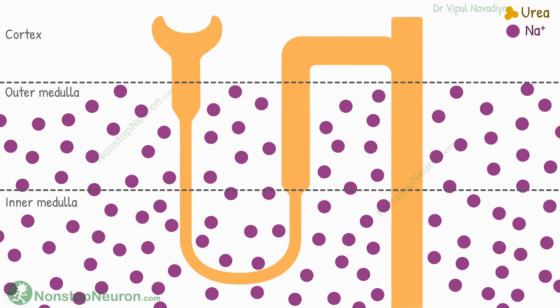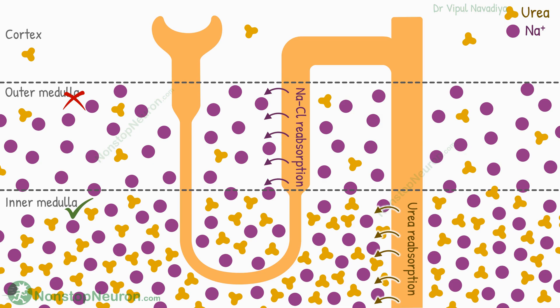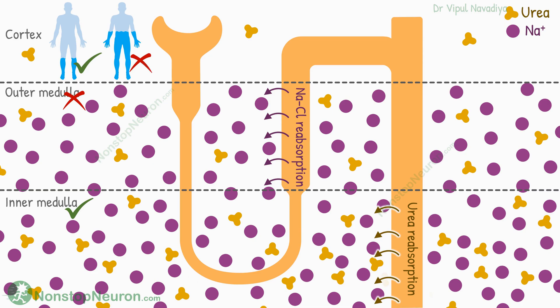A few more points. Urea contributes to hyperosmolarity mainly at the inner medulla. In the outer medulla, hyperosmolarity mainly comes from sodium and chloride ions. This is because the thick ascending limb, which reabsorbs sodium and chloride, is located in the outer medulla, and the inner medullary collecting duct, which reabsorbs urea, is located in the inner medulla. Thus urea does not contribute to hyperosmolarity throughout the entire medulla. Moreover, it does not even contribute all the time — urea gets concentrated only when body water is low and the kidneys are producing very concentrated urine. In conditions of water abundance, the kidneys produce dilute urine, and urea does not get concentrated in the inner medulla.